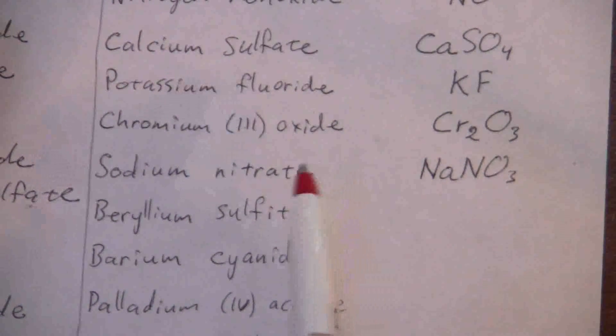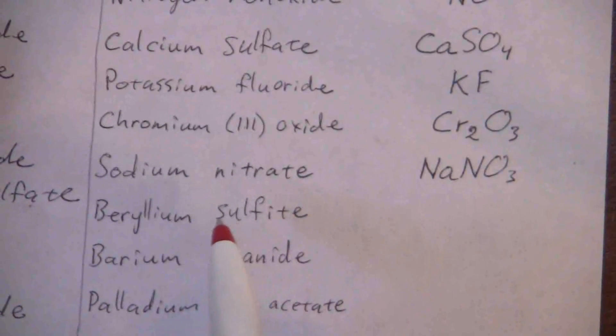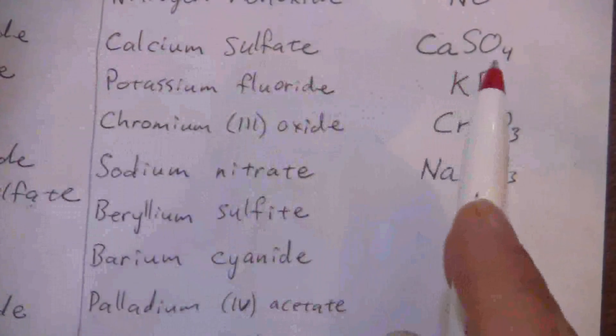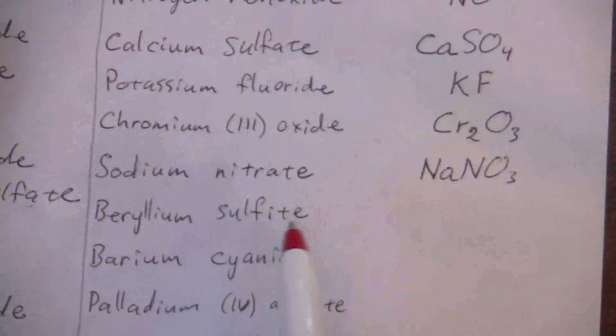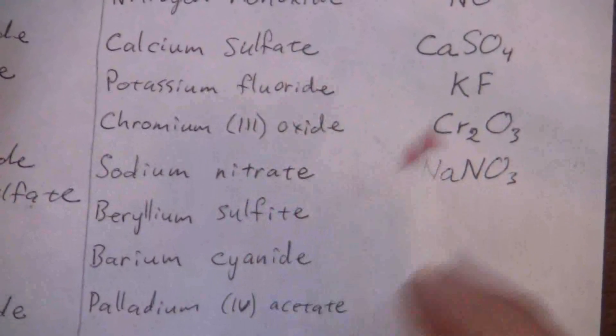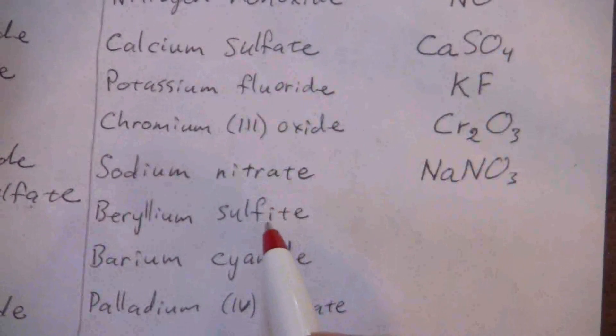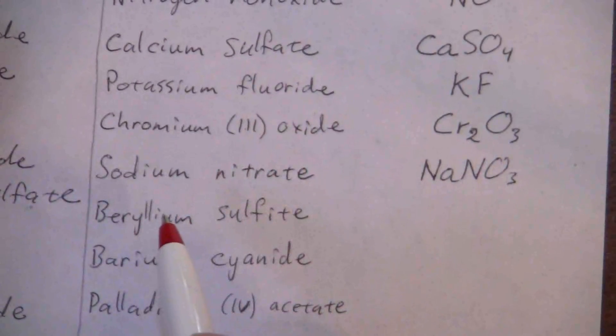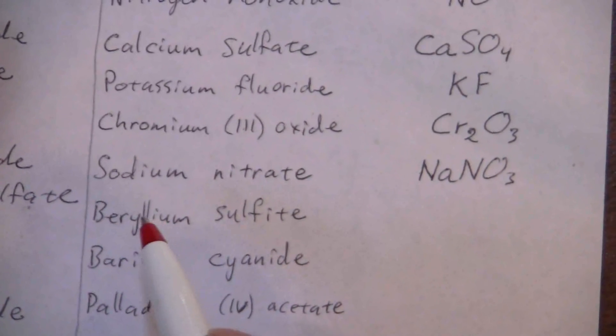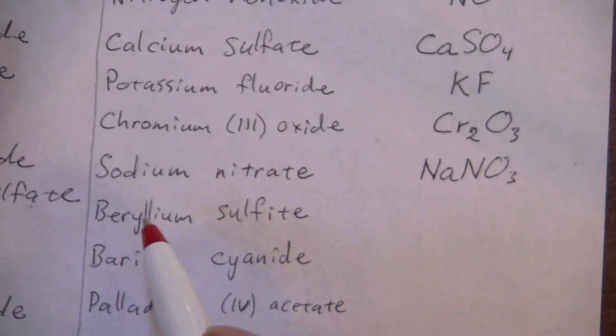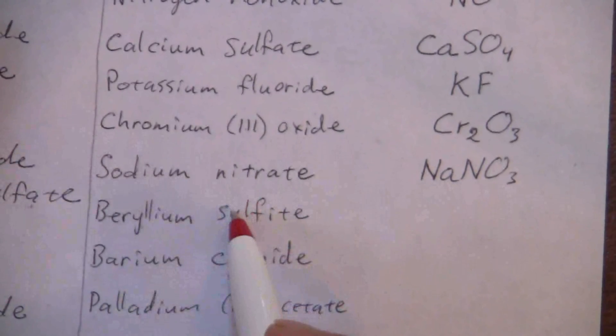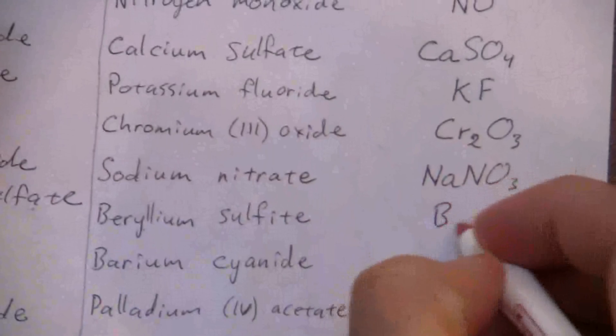Beryllium sulfite - this is one of those slightly less common ions but still important. Sulfate is SO4, so sulfite has one less oxygen, so SO3, same charge negative two. Beryllium is the first alkaline earth metal, it has a positive two charge. Positive two, negative two, so this is just BeSO3.